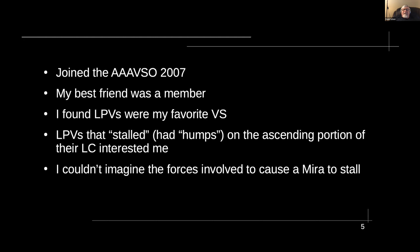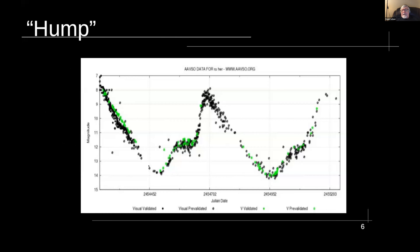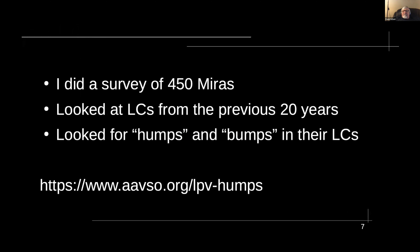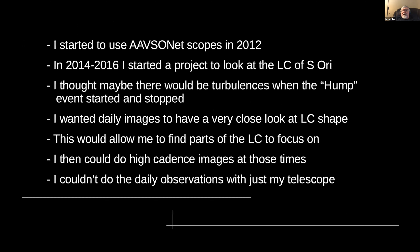I kind of focused this on my use of the AAVSO-NET, and I'm going to talk about three of my favorite stars — how I use it and three example projects. In 2006, I had an observatory built at Deerlick Astronomy Village in Georgia. I joined AAVSO in 2007 because my best friend was a member. At the time, I wanted to do something a little bit more serious. Looking around at lots of stars, I found that LPVs were my favorite variable stars, and after a while I started getting interested in LPVs that stalled or had humps on their ascending light curve. I just still can't imagine the forces involved that would cause a Mira to stall.